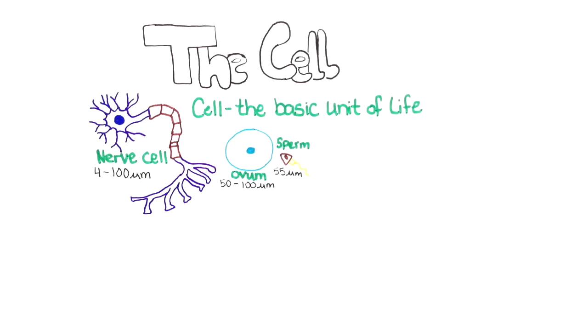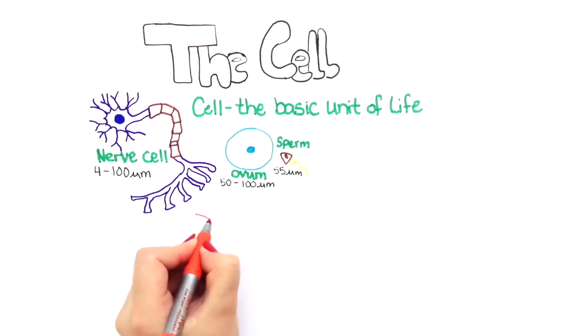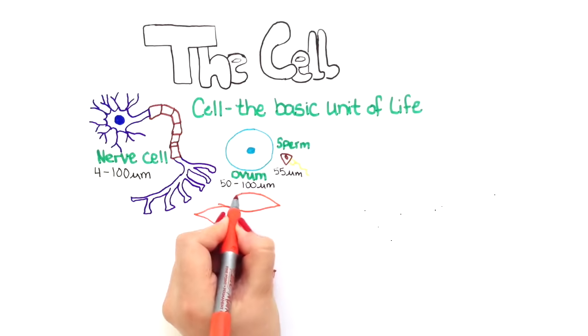The head is 5 micrometers, while the remaining portion is 50 micrometers. There are more than 600 muscles in your body and these muscles are made up of muscle cells.